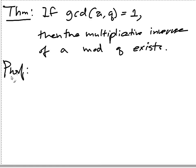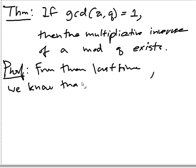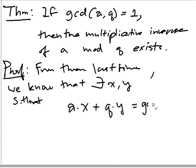So the proof relies on the fact that you can find two numbers x and y such that the product of x times a plus y times q equals to the gcd. So from the theorem last time, we know that there exist x and y, integers x and y, such that a times x plus q times y equals to the gcd of a and b, that's 1.